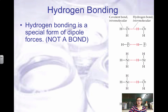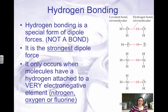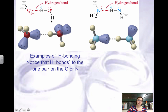Hydrogen bonding is not actually a bond — it is an attraction, shown as a dotted line. It is the strongest type of dipole force. It only occurs when molecules have a very electronegative element attached to a hydrogen, specifically hydrogen bonded to N, O, or F — you can remember HNOF. A hydrogen from another molecule is then attracted to the partially negative side of that molecule. The covalent bonds are the intramolecular forces; the hydrogen bonds are the intermolecular forces. The hydrogen is attracted to the lone pairs on the partially negative side of the atom.